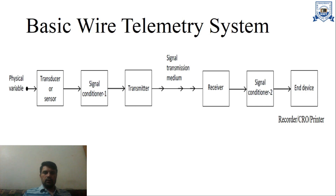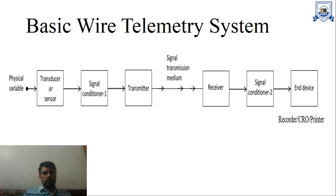The next block is signal conditioner one, which conditions the signal. In the signal conditioner, we have filters, amplifiers, modulator, demodulator, etc. The next step is our transmitter, in which we have a transmitting antenna. Next we have the signal transmission medium, which in this case is through wires — wires may be copper wires, etc.